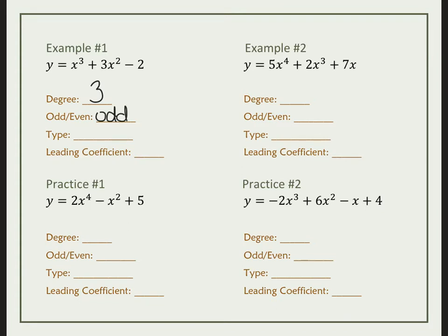Odd means my end values — one will be going up, one will be going down. What's the name? If it's a third degree, the name is cubic. So when it says type or name, it's going to be cubic. My leading coefficient is the number in front of x cubed. My number in front is 1, because if you don't see a number, it's always a 1.